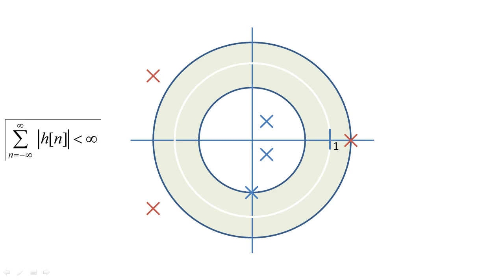So that means that all right-sided poles must be less than magnitude 1, and all left-sided poles must be greater than 1.